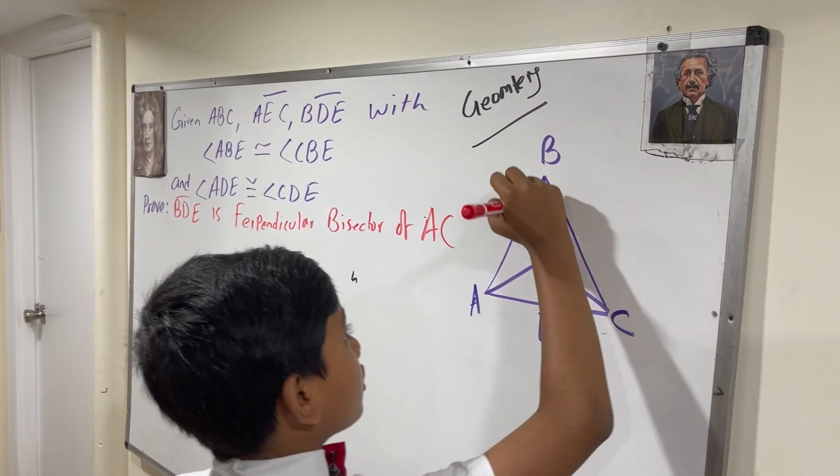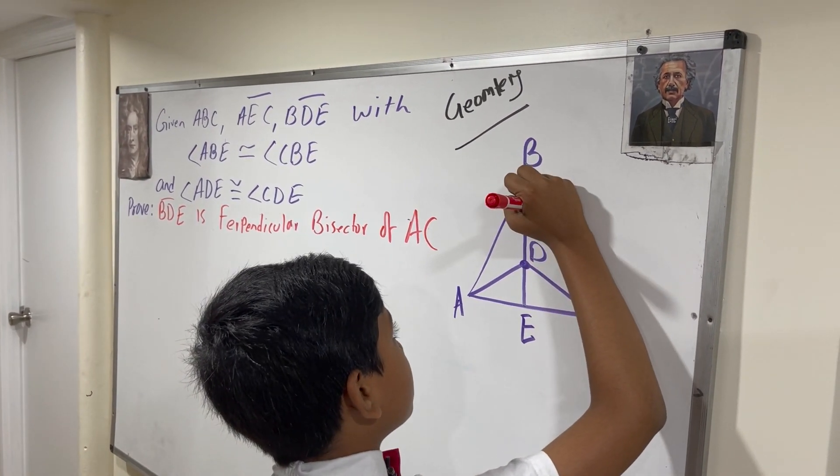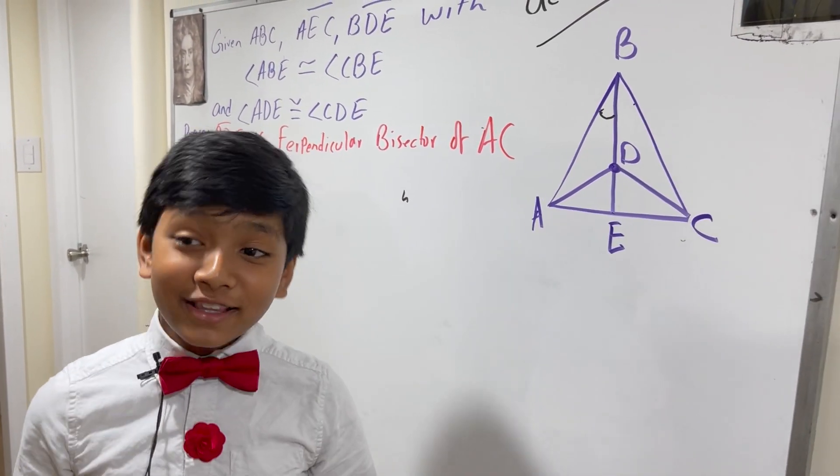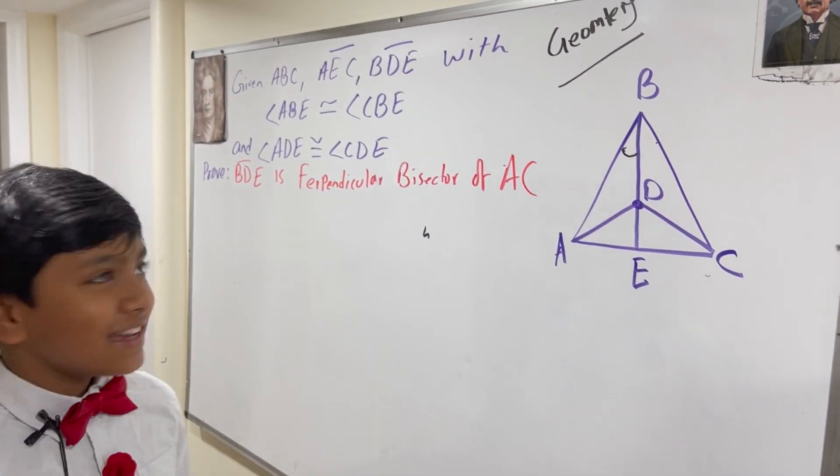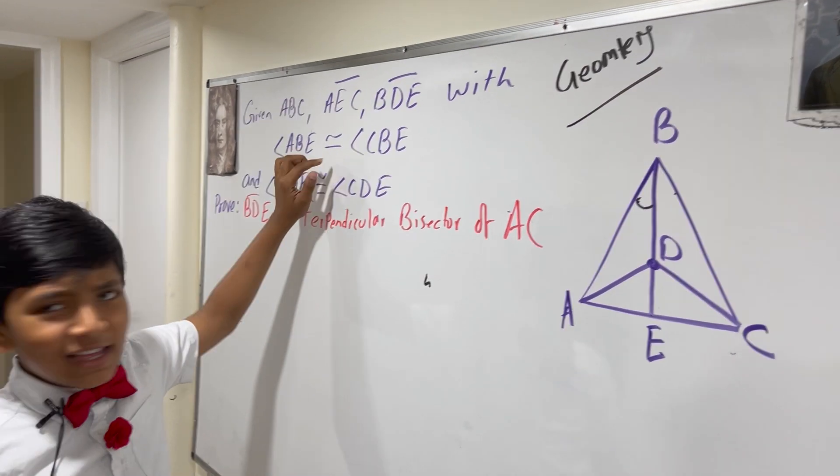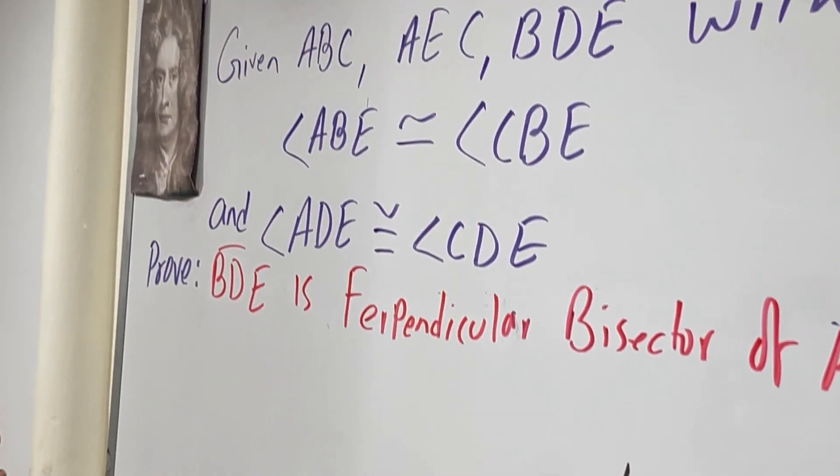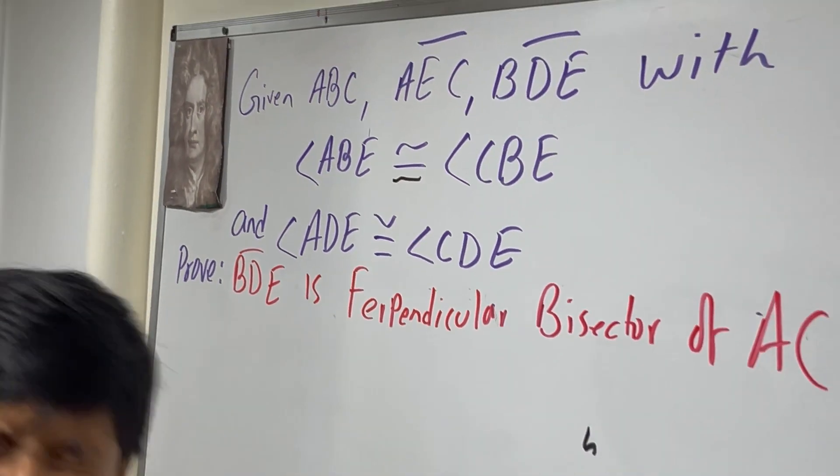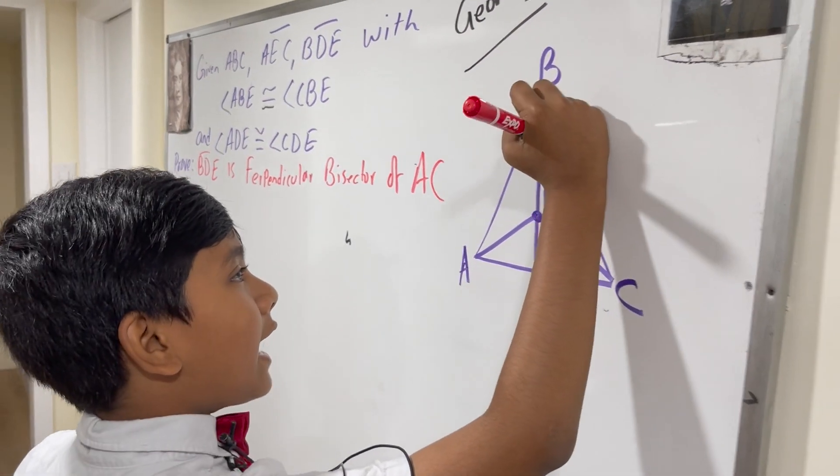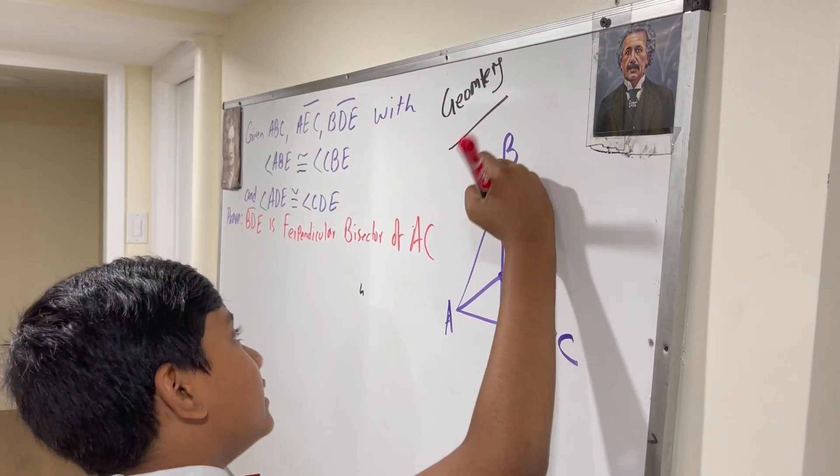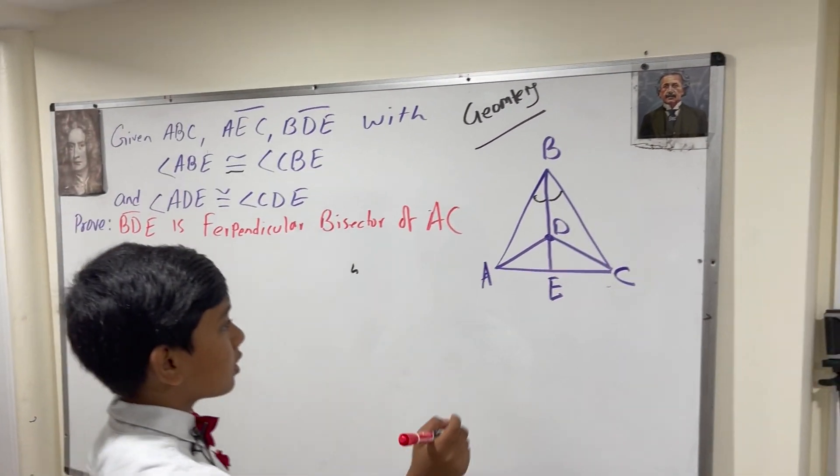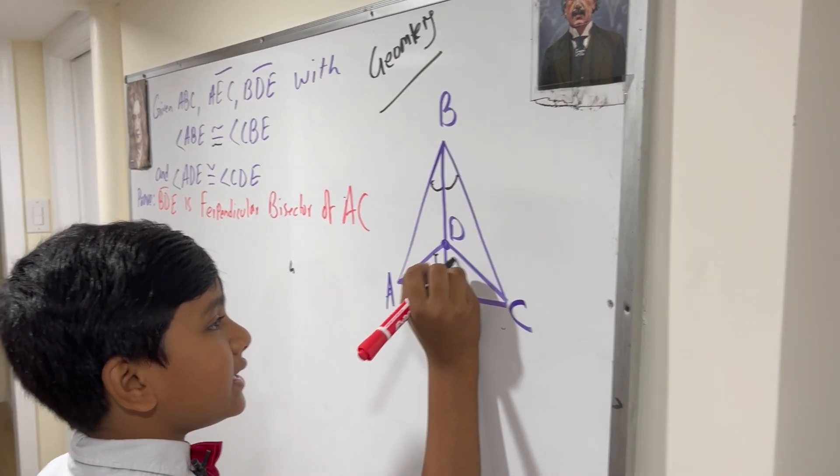So angle ABE is over here. What is congruent? Congruent means equal. So anyway, now we have angle CBE is also congruent, and angle ADE is congruent to angle CDE.